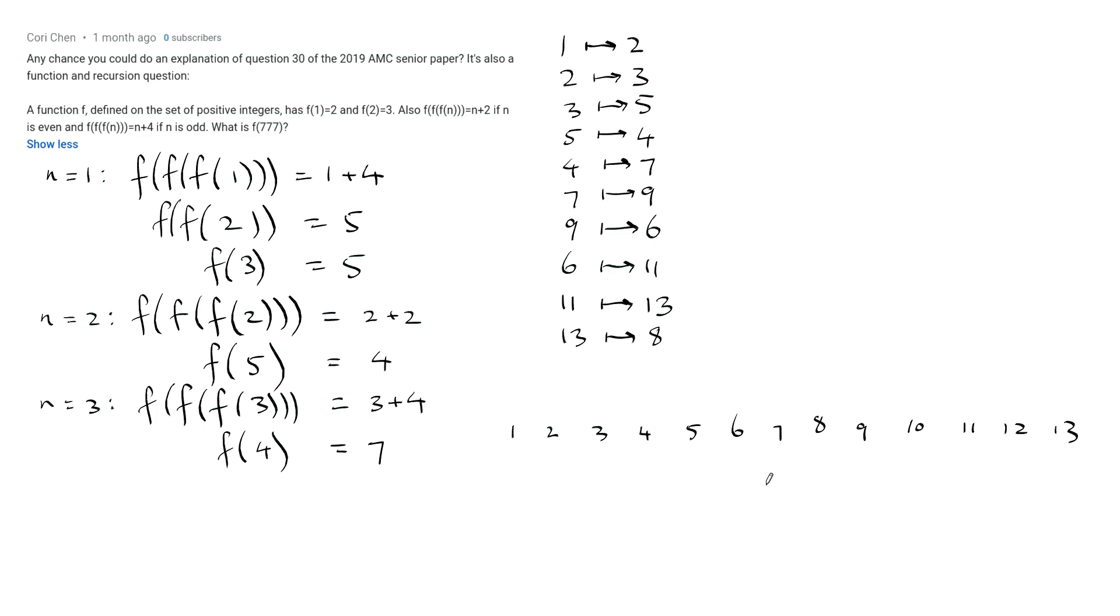And then draw arrows between them to show this information. So 1 maps to 2, 2 maps to 3, 3 maps to 5. 5 maps backwards, so I decided to draw that on top rather than underneath. And then we've got 4 maps to 7, 7 maps to 9, 9 maps back to 6, 6 goes to 11, 11 goes to 13, 13 goes back to 8.